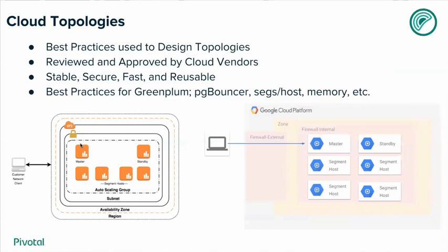Best practices have been used to design the topology for the deployment of Greenplum running in the various clouds. They've been reviewed and approved by the cloud vendors, so you know they're going to be stable, secure, fast, and reusable. Greenplum best practices have also been implemented, such as using a load balancer, a PG balancer, a number of segments per host, and member configurations.